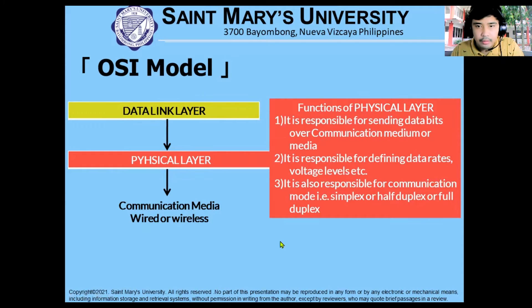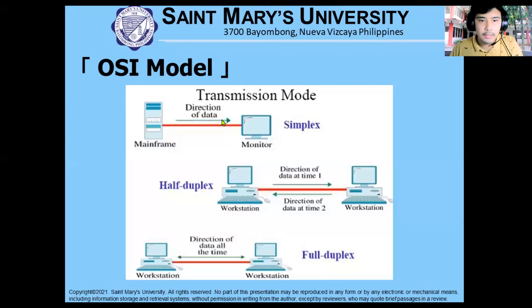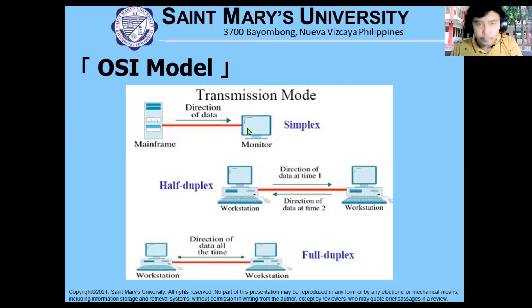Next, the physical layer. The physical layer is responsible for sending data bits over a communication medium. It is responsible for defining data rates and voltage levels, and also defines the communication mode: simplex, half-duplex, or full-duplex. When we say simplex, the direction of data is only one way — for example, from the server or mainframe to the monitor.